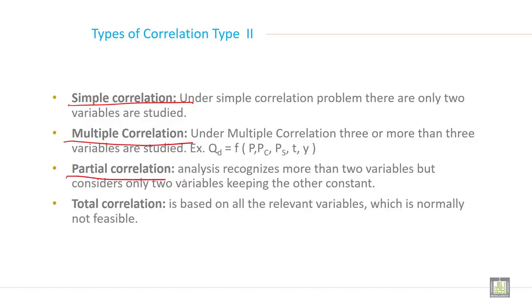Partial correlation. Analysis recognize more than two variables but consider only two variables, keeping the other constant. When you have more than two variables or you are keeping only two variables to check the relationship between them and keeping all other variables as a constant parameter, then it is called partial correlation.